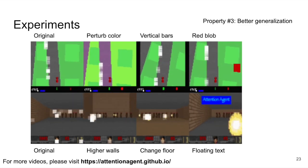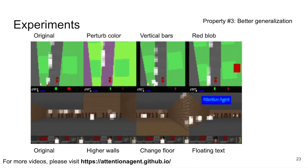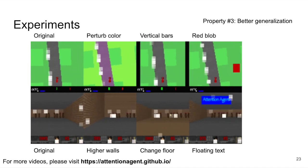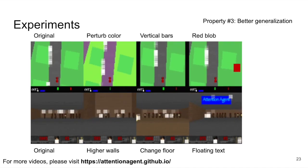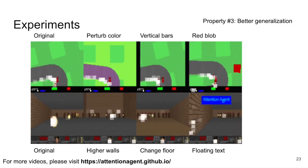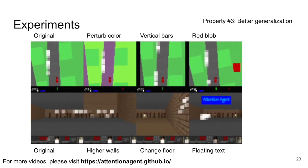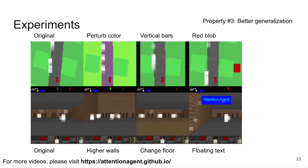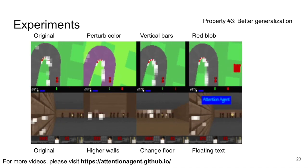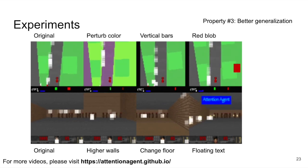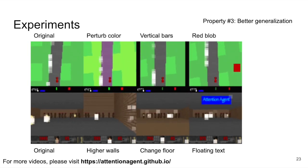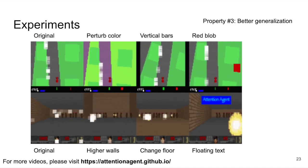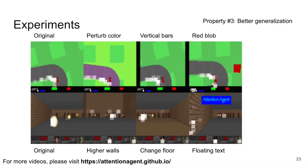As a summary of this test, attention agent generalizes well to all modifications while the baselines fail. If you look at the animation on the screen, you'll notice the consistency between the agent's attention locations in the modified environments and those in the original task. Even though in some frames attention agent seemed to get distracted, it was able to pull its attention back when task-critical objects appeared. Please refer to the paper for more quantitative results. At this point, we conclude that attention agent learned to generalize better simply by not seeing things that are irrelevant to the task.